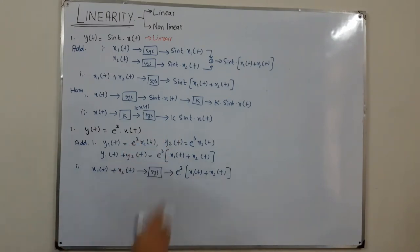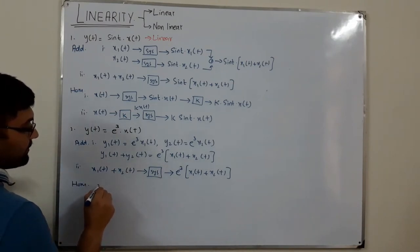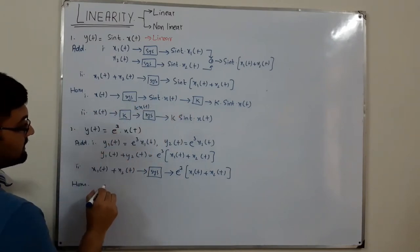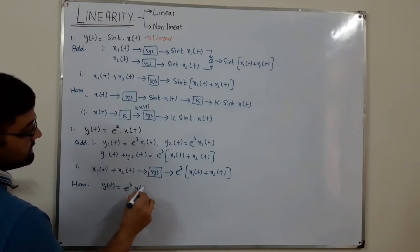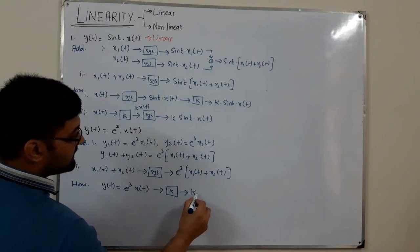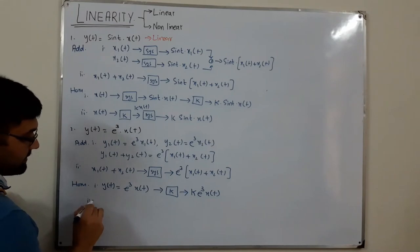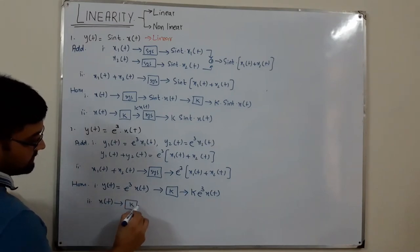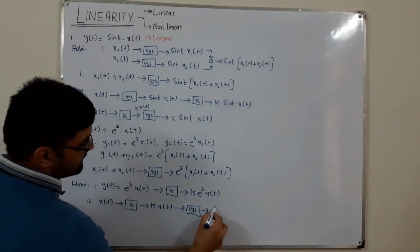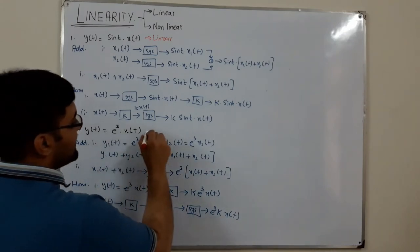Checking homogeneity for y(t) = e^3·x(t): the output is e^3·x(t). Scale by k to get k·e^3·x(t). In step two, scale the input first to k·x(t) and provide to the system; the system multiplies e^3 by k·x(t), giving e^3·k·x(t). These are the same — both homogeneity and additivity are satisfied. This is a linear system.